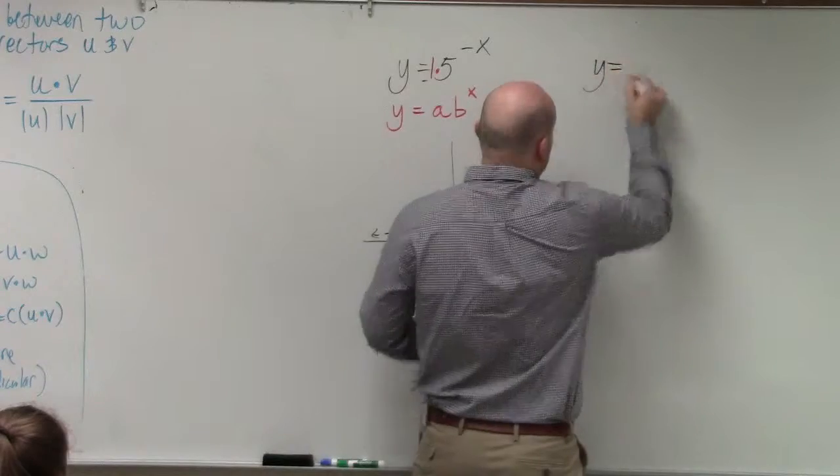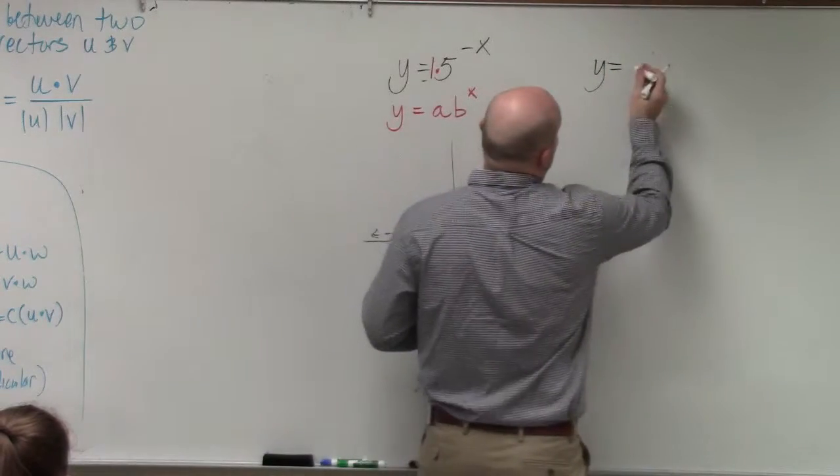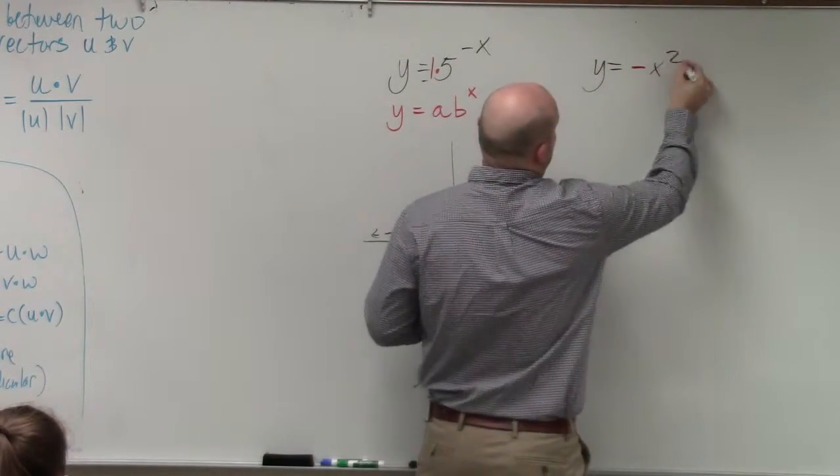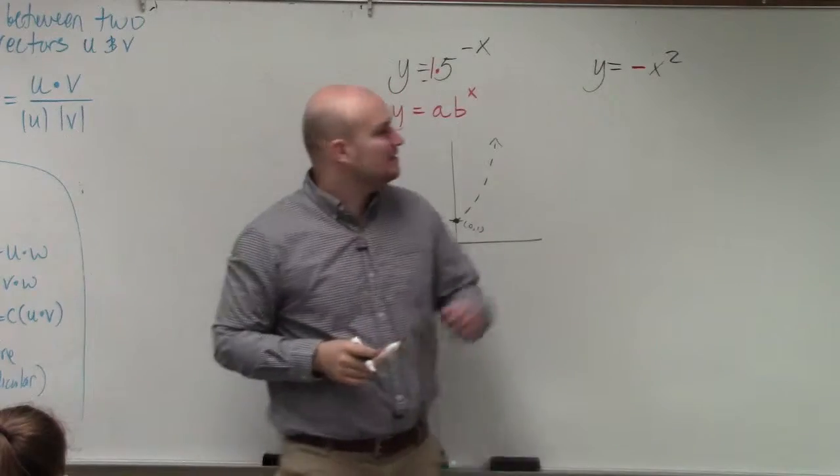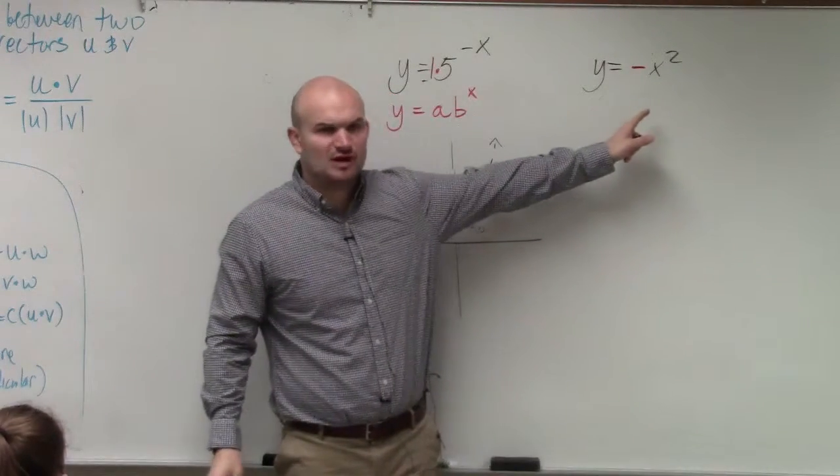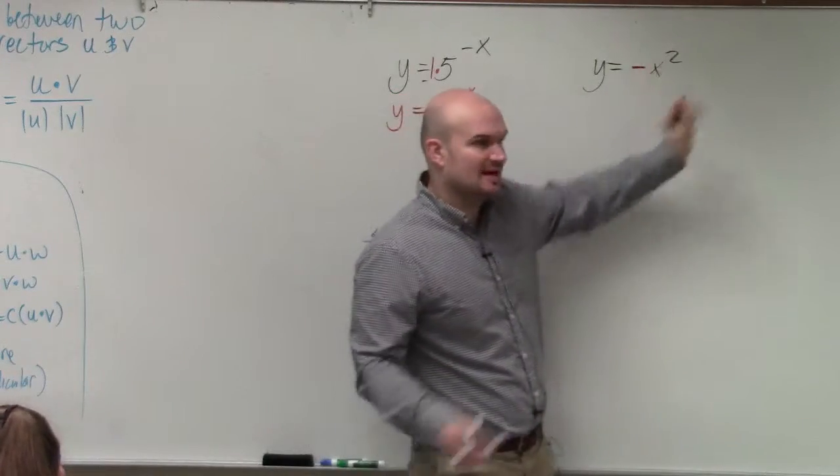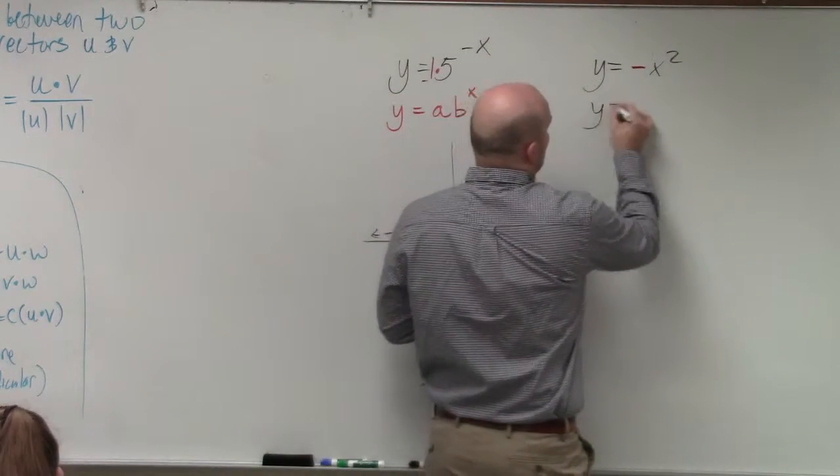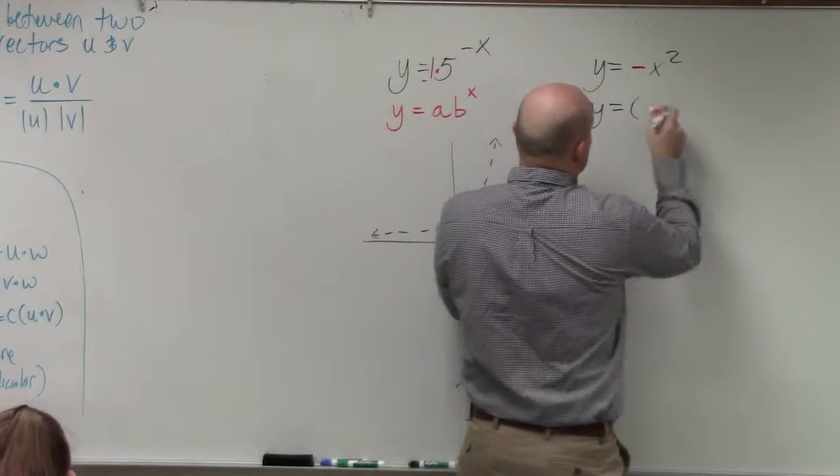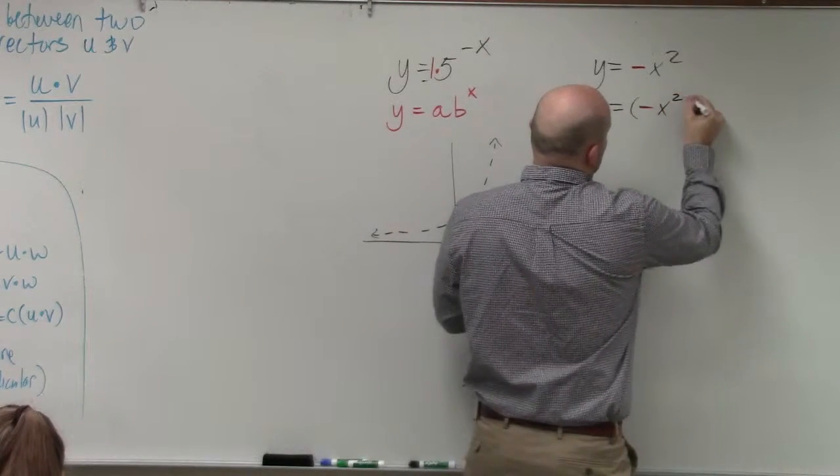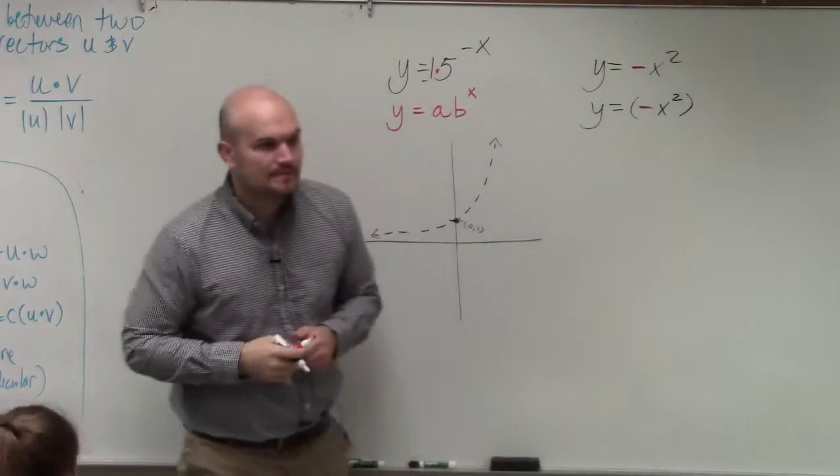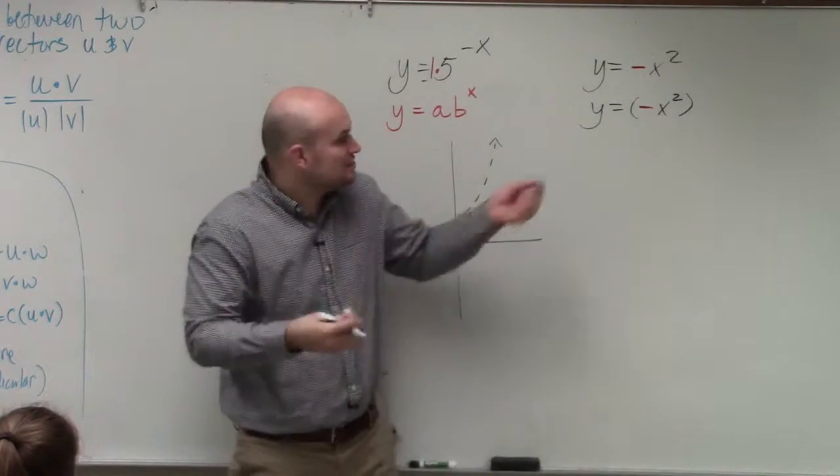If I had y equals negative x squared, did anybody remember what this was a reflection about for a quadratic? x-axis, right? That's being a negative being multiplied on the outside. So if I wanted to represent multiplying a negative inside the function, it would look like this. x, I'd put it inside of the function. Oops. I'm sorry.